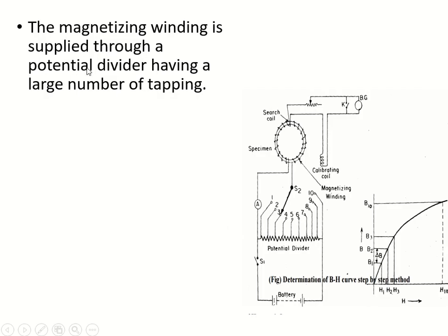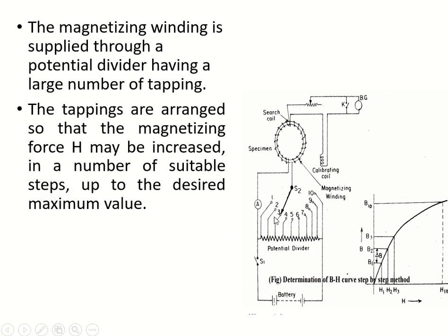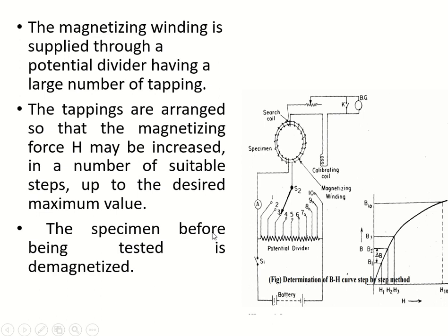The magnetizing winding is supplied through a potentiometer divider having a large number of tappings. The tappings are arranged so that the magnetizing force H may be increased in suitable steps up to the desired maximum value. Initially, with S2 on tapping 1 and S1 closed, maximum resistance is in the circuit so current is low. Switching S2 to the second position decreases resistance, so current increases. Switching to the third position further decreases resistance and increases current. In this way, different values of B for different values of H can be calculated.